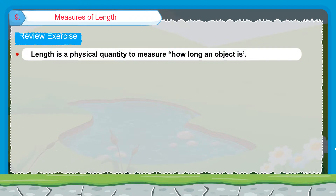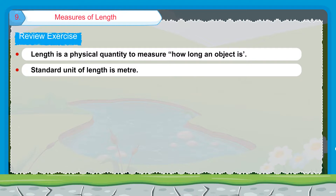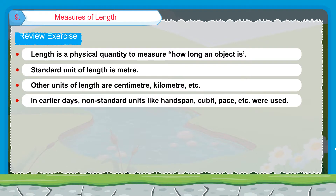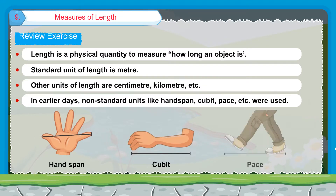Length is a physical quantity to measure how long an object is. The standard unit of length is meter. Other units of length are centimeter, kilometer, etc. In earlier days, non-standard units like hand span, cubit, pace, etc. were used.